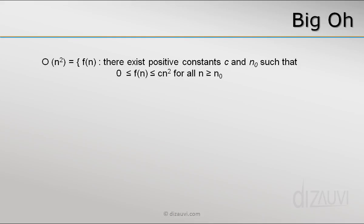So the Big O of n² is a set of all the functions. Remember, Big O is a set of functions. So Big O of n² is a set of all those functions f(n).